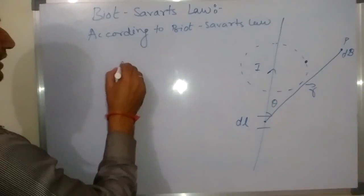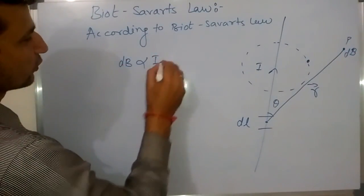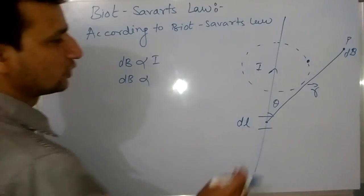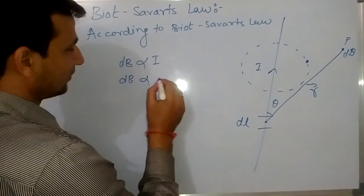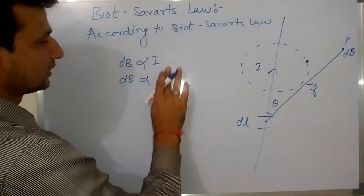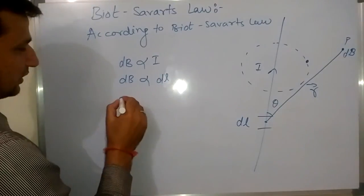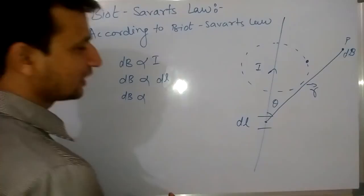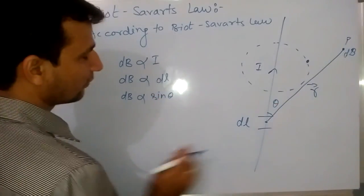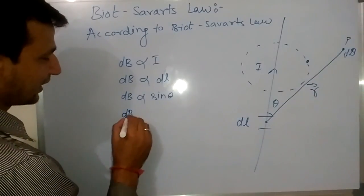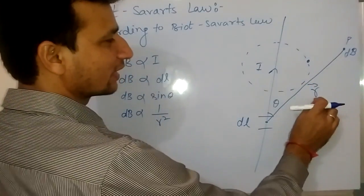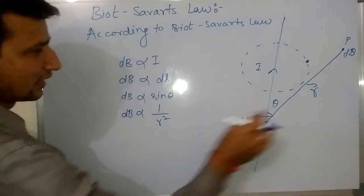The strength of magnetic field dB at point P is directly proportional to I, directly proportional to length DL, and inversely proportional to r squared, where r is the distance.